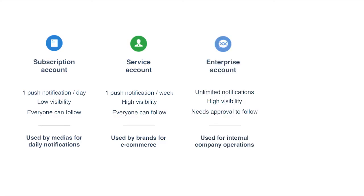The third kind is enterprise accounts. They can send an unlimited number of notifications, unlike the two first kinds, and they have very high visibility. But the main drawback is that you need two-way approval to use them — the follower has to follow the account, but the account also has to approve the follower, and needs to have the WeChat ID of the follower, requiring an offline exchange. So it's perfect for internal company communication — that's why it's called enterprise account — and also very good for handling a small number of distributors.